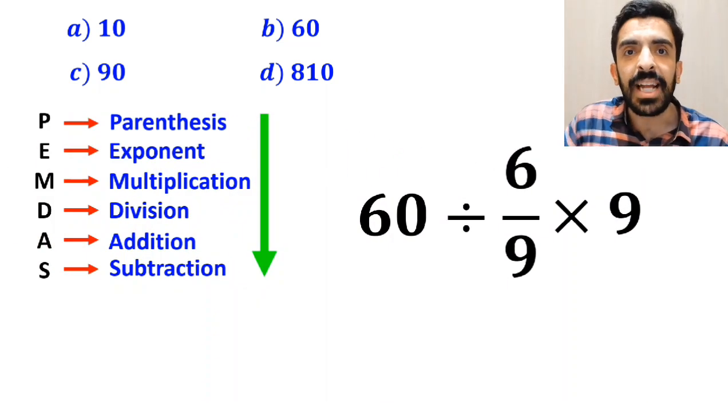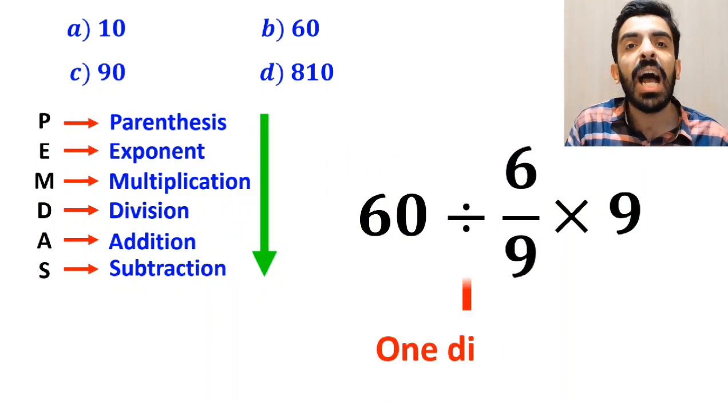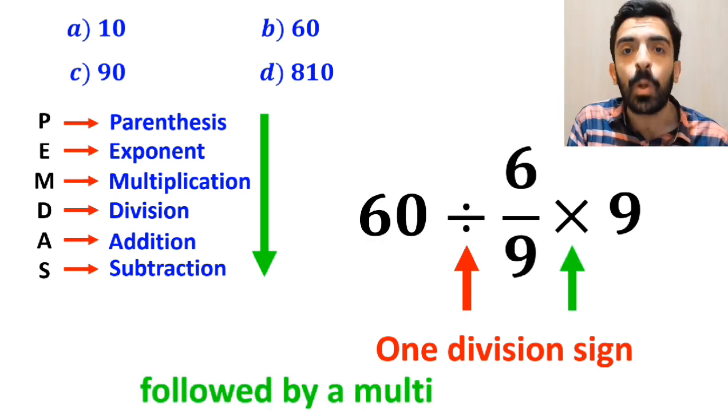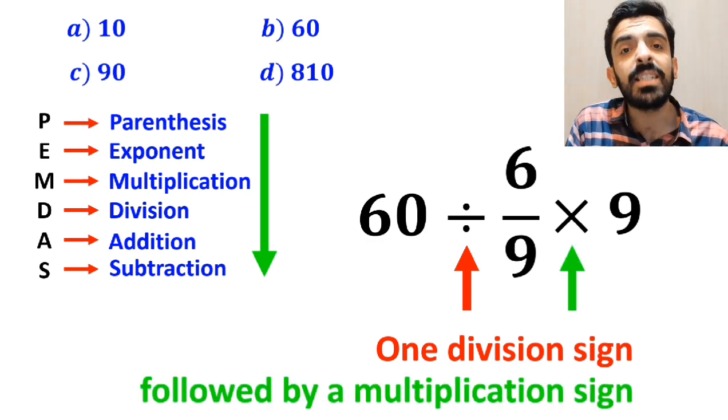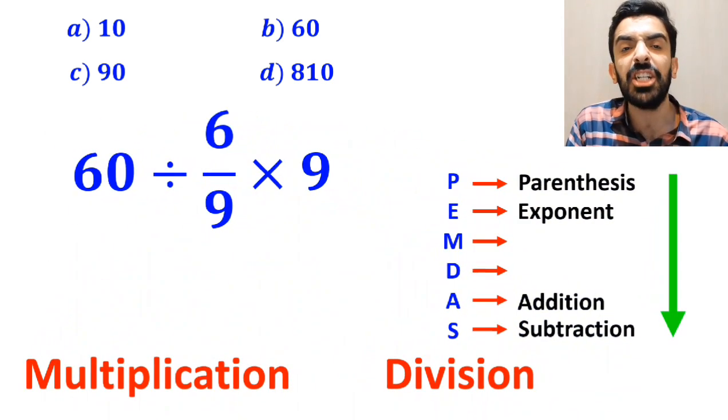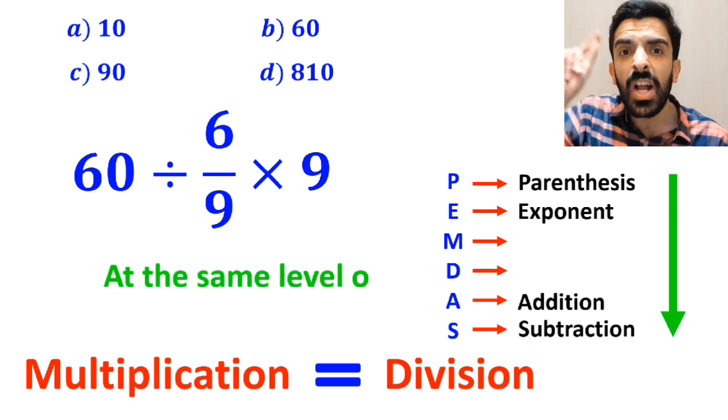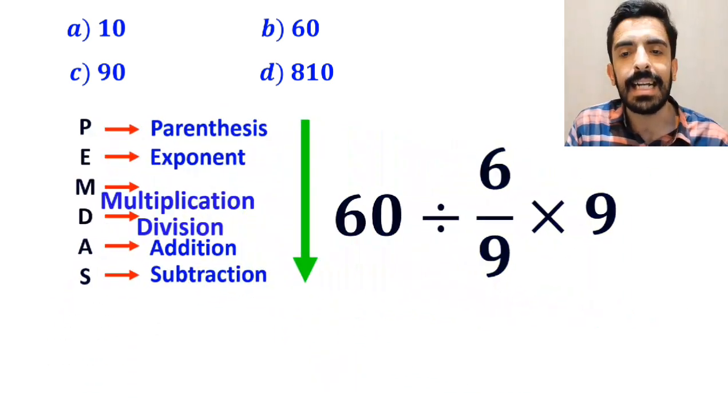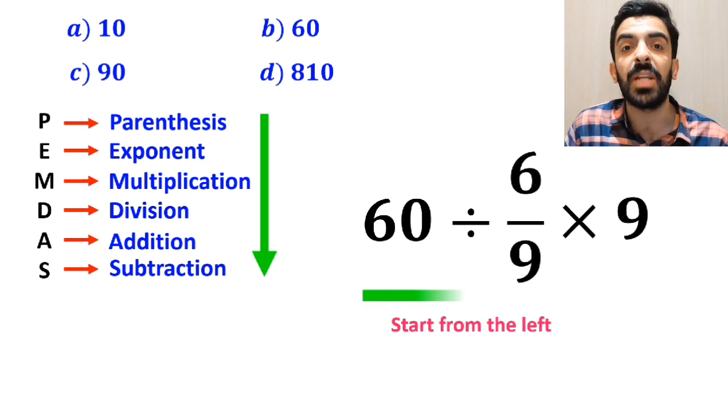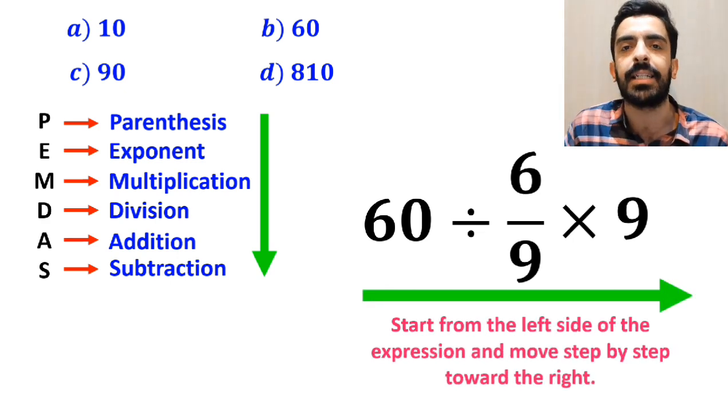As you can see in the image, in this expression, we have one division sign followed by a multiplication sign. It's very important to note that multiplication and division are at the same level of precedence. In this case, the best thing to do is to start from the left side of the expression and move step by step toward the right.